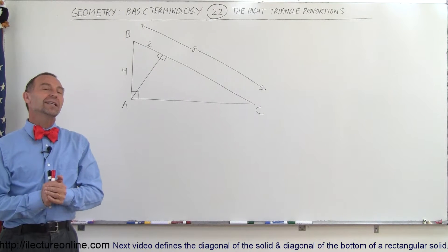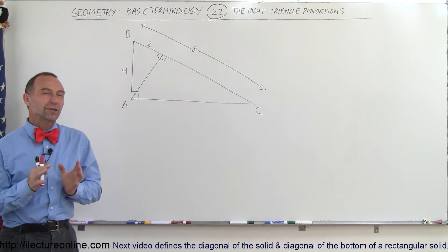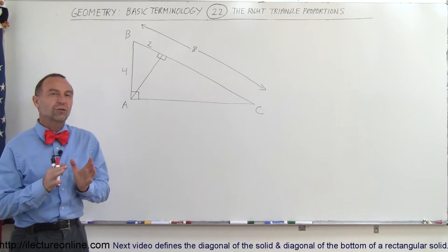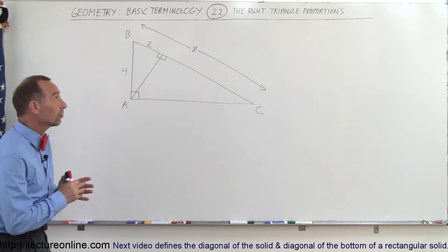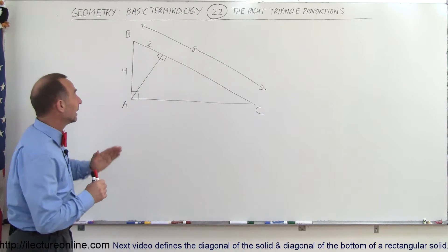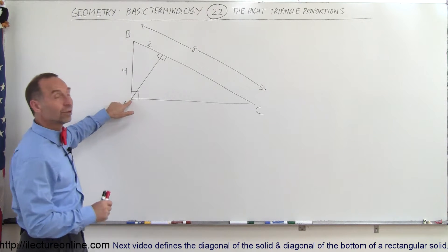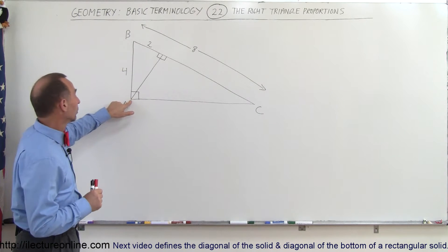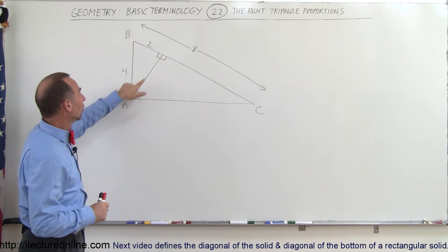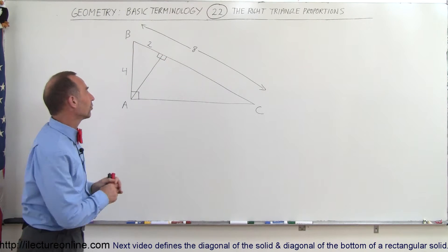Welcome to Electron Line. In this video, we're going to see something about the proportion of right triangles, especially when we draw a line from the vertex where the right angle corner is, to the hypotenuse of the triangle.